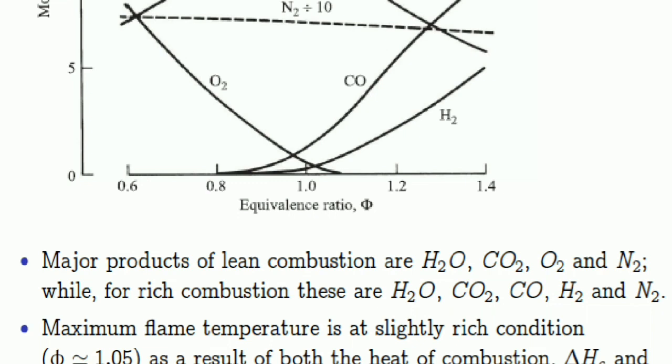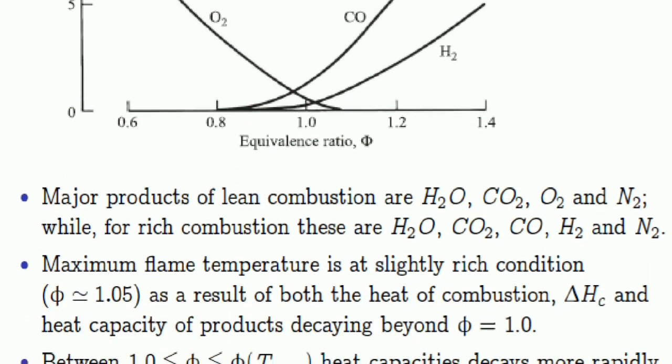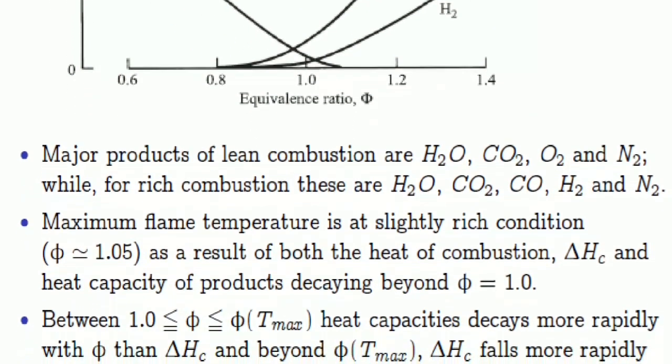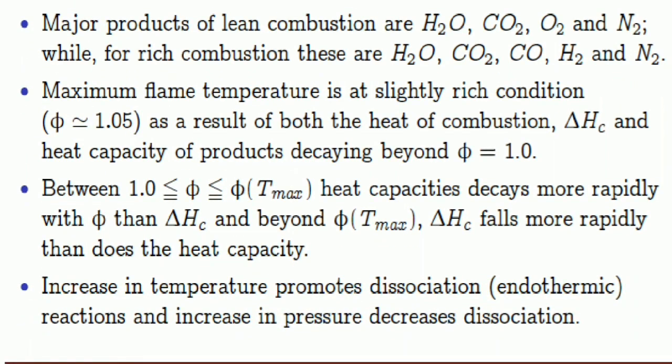Maximum flame temperature is at slightly rich condition (Φ ≈ 1.05) as a result of both the heat of combustion ΔHc and heat capacity of products decaying beyond Φ = 1.0. Between 1.0 ≤ Φ ≤ Φ(Tmax), heat capacities decay more rapidly with Φ than ΔHc, and beyond Φ of Tmax, ΔHc falls more rapidly than does the heat capacity.